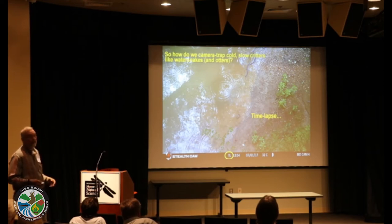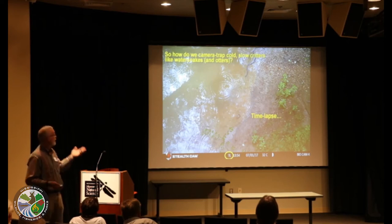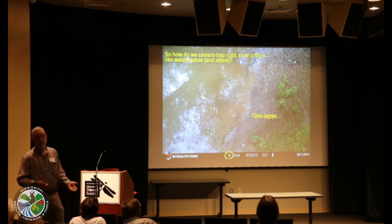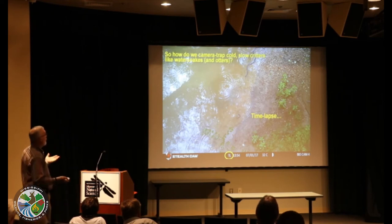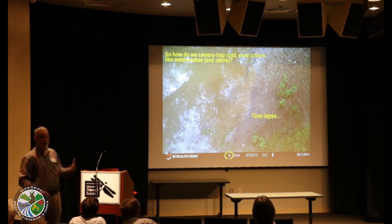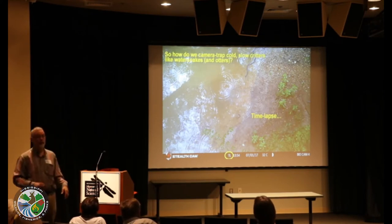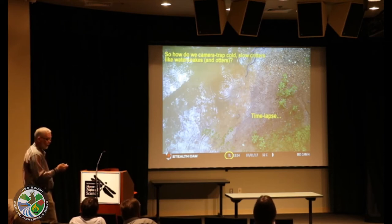That's a plain-bellied water snake up there. Snakes are ectotherms — the snake's body temperature is probably not significantly different from the water it's in, and it's probably not moving particularly fast, and it's not very big. So the camera is not going to pick up that snake. You'll notice this photo is labeled 'TL' — time-lapse. I programmed the camera to take a picture on schedule, and I got lucky; the snake was there when the camera fired.